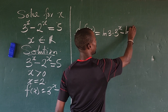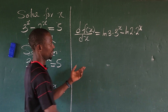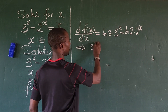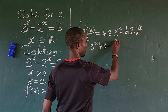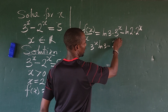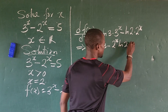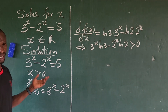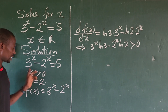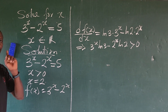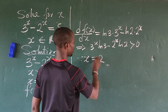The derivative gives us: f'(x) = ln(3) · 3^x minus ln(2) · 2^x. This implies 3^x · ln(3) minus 2^x · ln(2), which is greater than zero. This proves that the left-hand side is a strictly increasing function. Since it's a strictly increasing function and x cannot be less than zero, x = 2 is the only real solution.